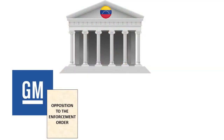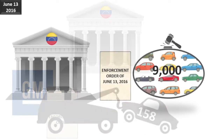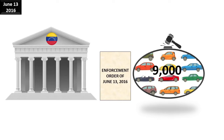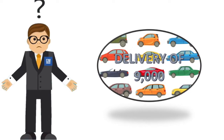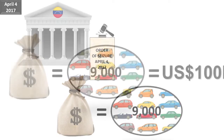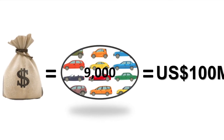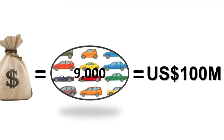GM opposed the enforcement order of 2007, which anyway ended up impounding 158 vehicles. On June 13, 2016, another enforcement order was issued against GM Venezuela renewing the injunction to hand over more than 9,000 vehicles. Since GM could not materially comply with the delivery of these vehicles, on April 4, 2017, the court ordered the forced seizure of any of GM's assets to collect a monetary sum equal to the value of 9,000 vehicles — approximately $100 million — based on an anonymous estimation without hearing any experts.